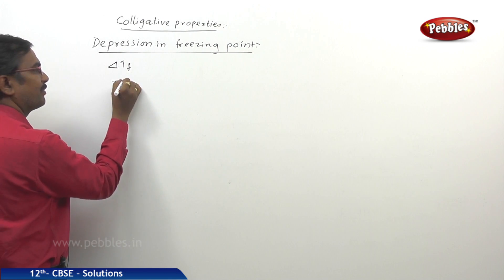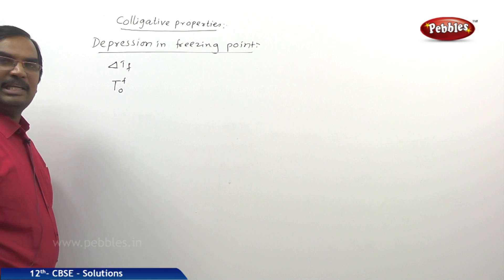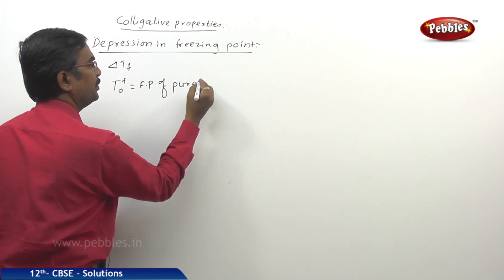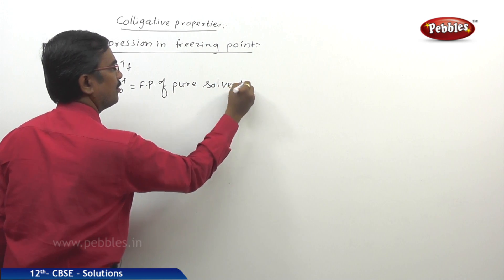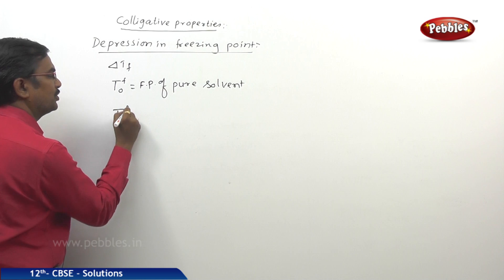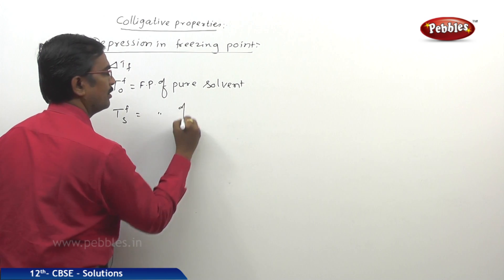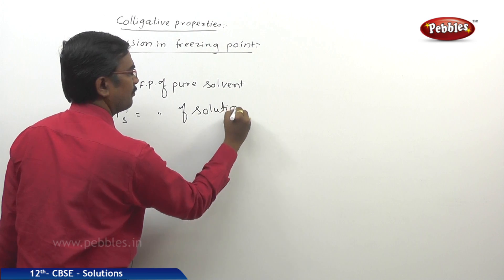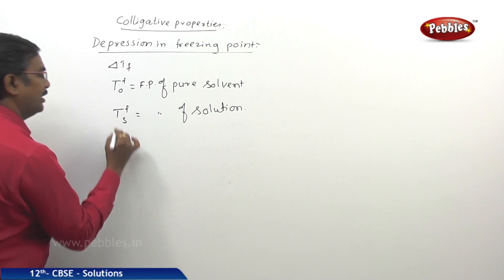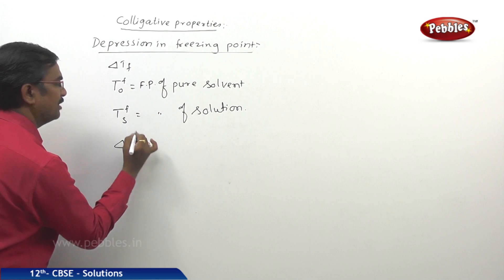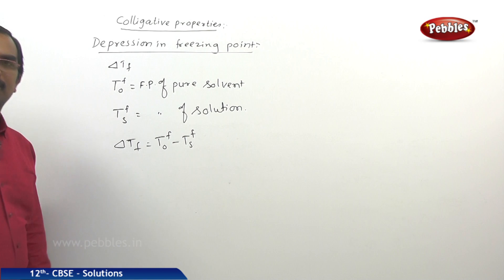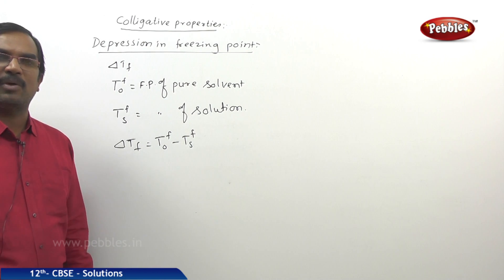Here T-naught-F is the freezing point of the pure solvent, and TfS is the freezing point of the solution containing the non-volatile solute. As per definition, delta Tf is given by T-naught-F minus TfS.